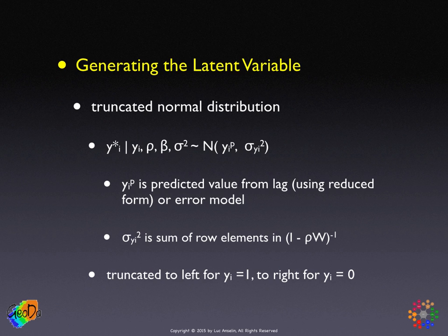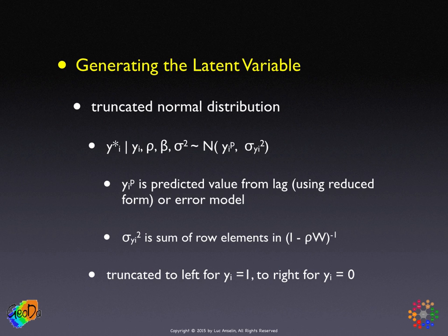The key step is the conditional distribution for the unobserved latent variable, where we condition on the observed y sub i and the values for all the parameters. In LeSage's work, this is proposed as a normal distribution where the mean is the (I − ρW)⁻¹Xβ vector for the lag model, and just Xβ for the error model. That's the difference between the two.